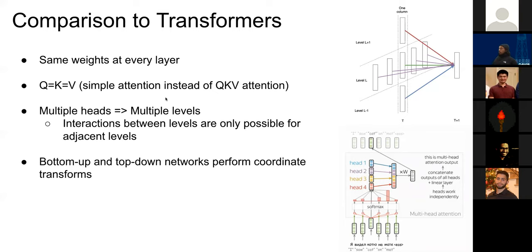This means we only need to produce one face representation — think of this as one query/key for each object at the lower level — so complexity is linear with respect to the number of objects rather than quadratic. Instead of multiple attention heads as in transformers, GLOM has multiple levels, with interactions only possible between adjacent levels rather than heads interacting in any direction. The bottom-up and top-down networks also perform coordinate transforms, which doesn't necessarily occur in transformer networks.